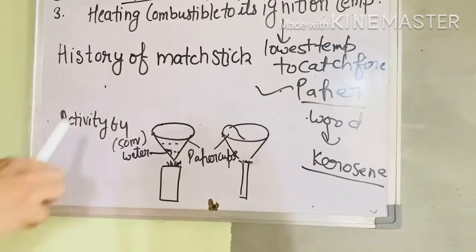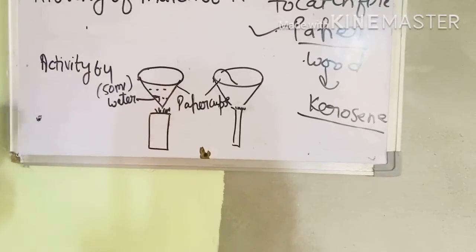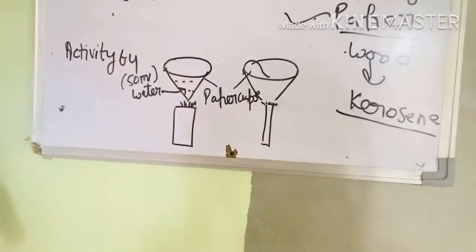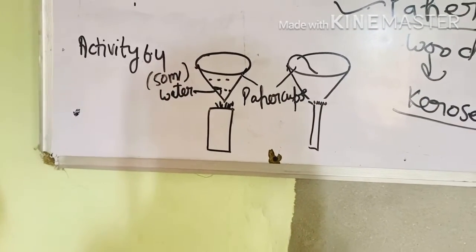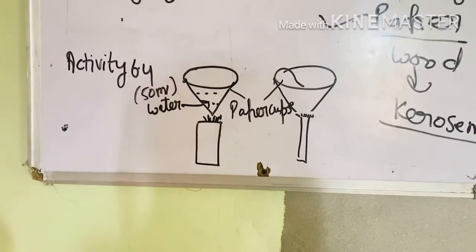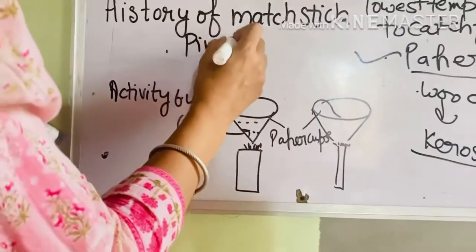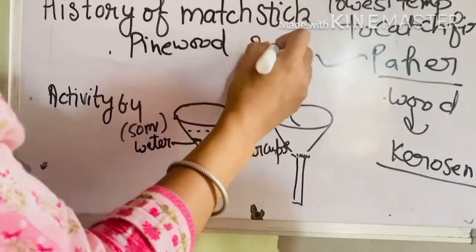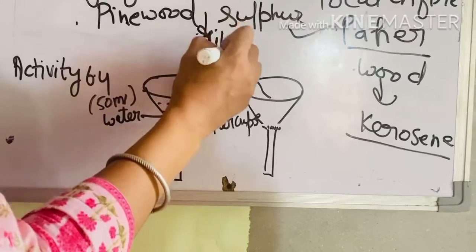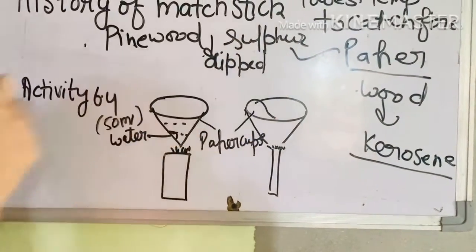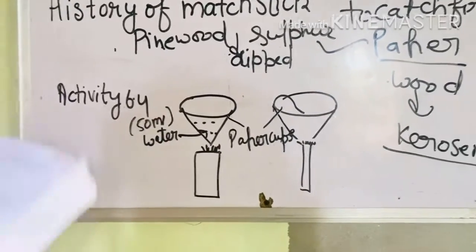The next topic is the history of the matchstick. The matchstick is made from pine wood. Once the pine wood is prepared, it is used as a matchstick.